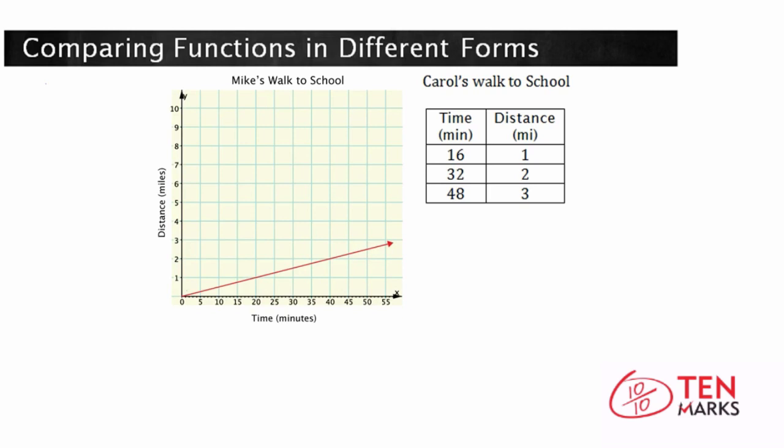Here's the scenario. Mike and Carol walk to school. Look at the functions and write equations for each, and then tell who walks faster. So you have a graph of Mike's walk to school and a table of values for Carol's walk to school.